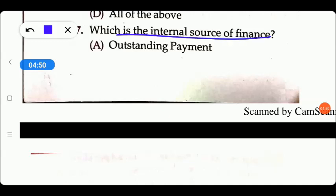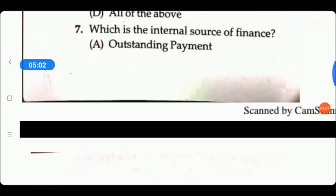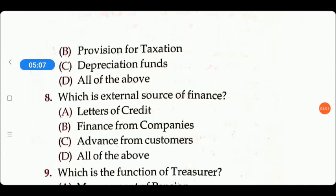Next question: which is the internal source of finance? Options are: outstanding payment, provision for taxation, depreciation funds, or all of the above. Outstanding payment, provision for taxation, and depreciation are all business-related internal sources. So option D is the right answer.